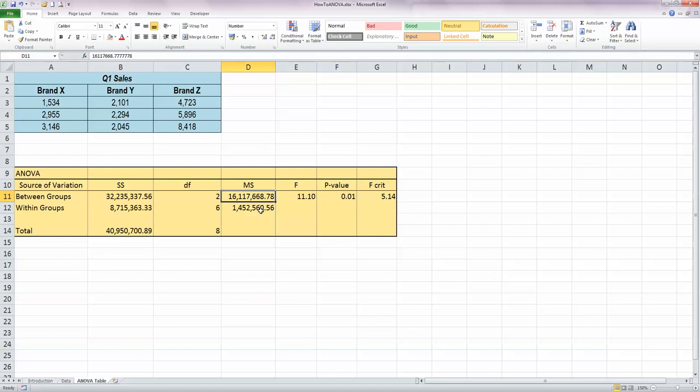The next column, column D, these are our mean square values, and these are calculated by simply dividing the sum of squares by the corresponding degrees of freedom, and this gives us 16 million sum of squares from between the groups, and 1.45 million within the groups. Then we come to our F-statistic, and this is the key statistic that we need here, and how we calculate that is that we divide the between-groups sum of squares by the within-groups sum of squares, in this case that gives us a value of 11.10. So that's the key statistic that we are looking for here. We also get a probability value, and we also get a critical value posted by Excel here. We'll see in a moment what these mean.